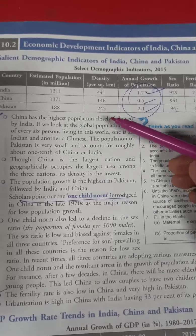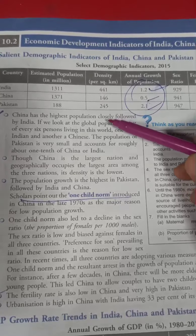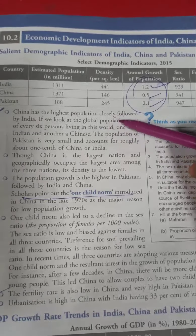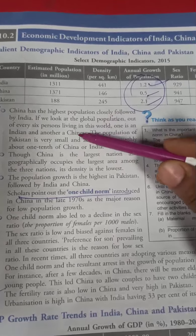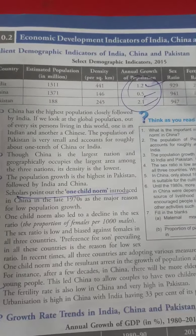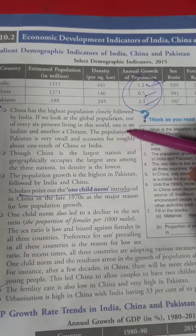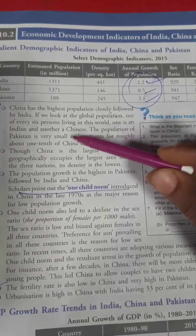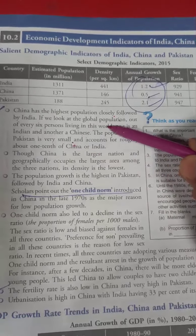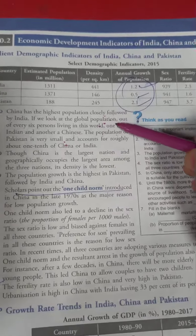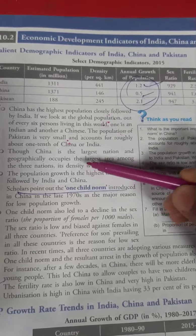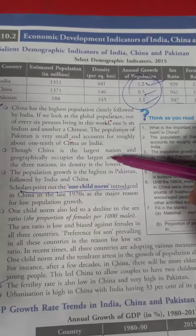China has the highest population in the world. At the global level, every 1 in 6 people is either Indian or Chinese. As compared to other countries, the population of Pakistan is very small, but the population growth rate of Pakistan is greater than India and China comparatively.